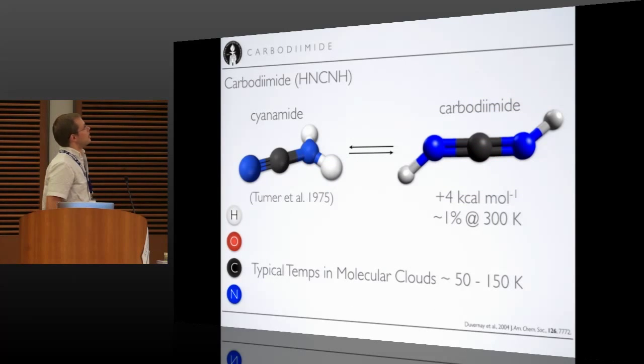So here's carbodiimide. It's actually a tautomer of cyanamide here. This molecule was detected in the interstellar medium in 1975. So you might say, why didn't people just go look for carbodiimide? And the problem is that this tautomer is 4 kcals per mole higher in energy, which doesn't sound much to a chemist.